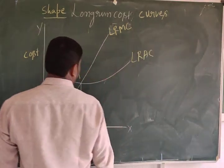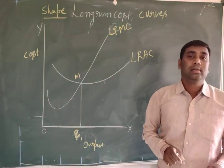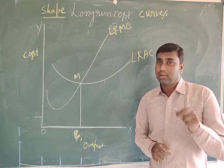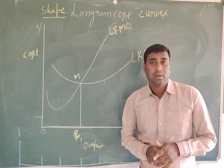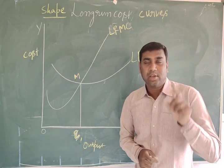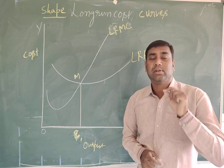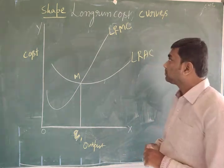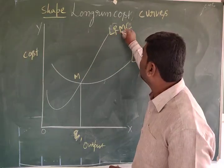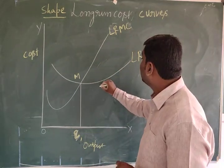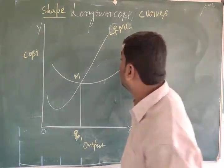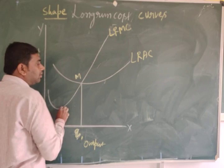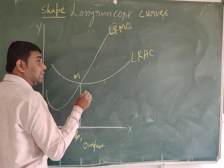This is the shape of the long-run cost curve. We can see the long-run marginal cost curve and the long-run average cost curve. Average cost is the cost of total production; marginal cost is the cost of production of an extra unit of a commodity — the addition to total cost. When the long-run average cost curve falls, the long-run marginal cost curve also falls less than that, and when it starts rising, marginal cost rises more than average cost.